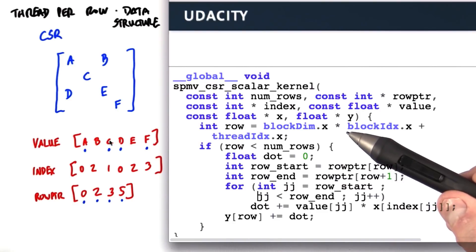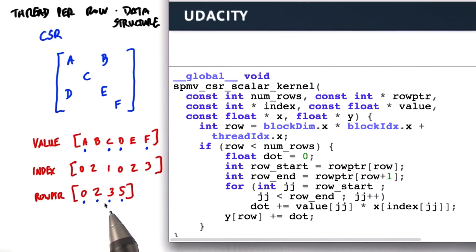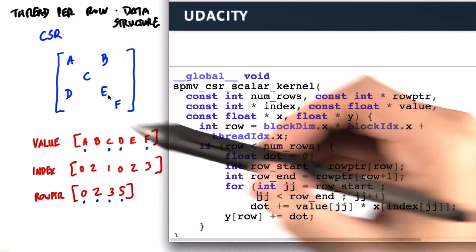Inside the if is the meat of the routine. Recall that row pointer contains the indices of the starts of each row. So for instance, the value 3 here says that the third element d here is the beginning of a particular row that then contains d and e.